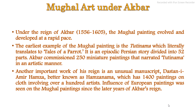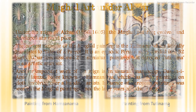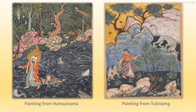Another important artwork of the reign of Akbar is an unusual manuscript, Dastan-e-Amir Hamza, better known as Hamzanama, which has 1400 paintings on cloth involving over a hundred artists. Influence of European paintings was seen on the Mughal paintings since the later years of Akbar's reign. Just look at these two paintings — one is from the Hamzanama and the other one is from the Tutinama.